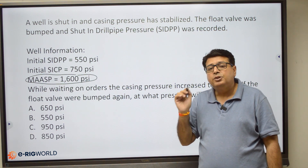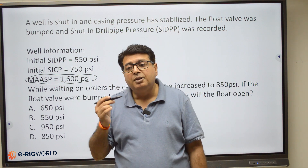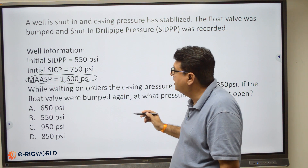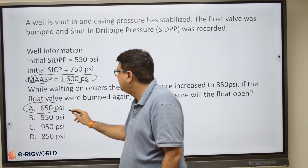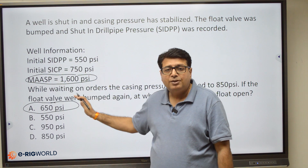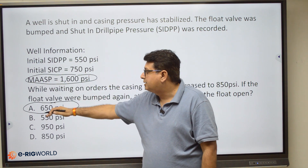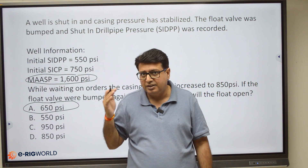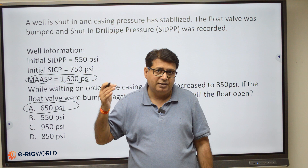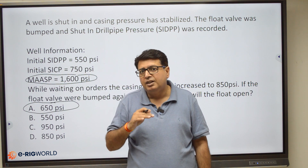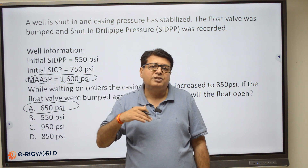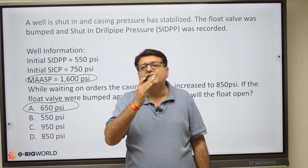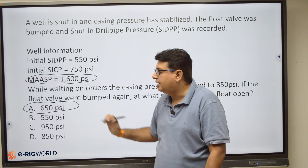Casing pressure was initially 750 and increased to 850, so casing pressure increased by 100 psi. Due to closed-well gas migration, drill pipe pressure will also increase by 100 psi. So the answer is 650 psi — the initial drill pipe pressure was 550, and it has increased by 100 psi, giving a reading of 650 psi when the float is opened.